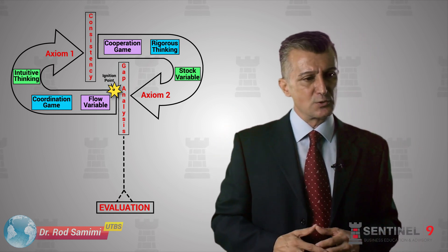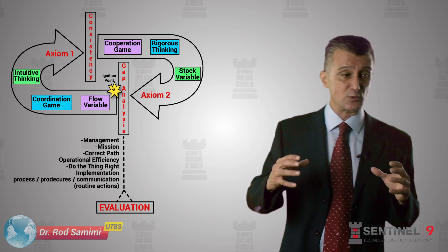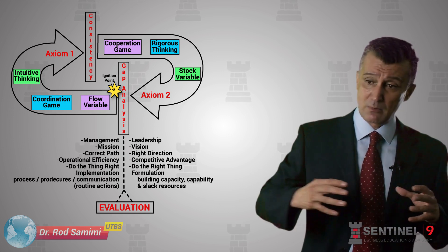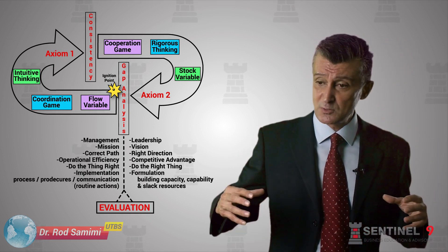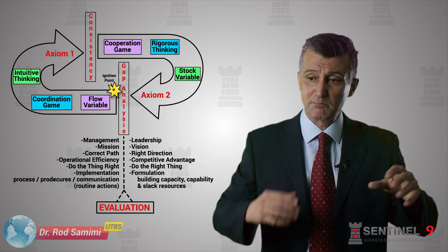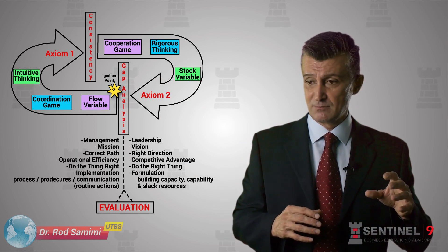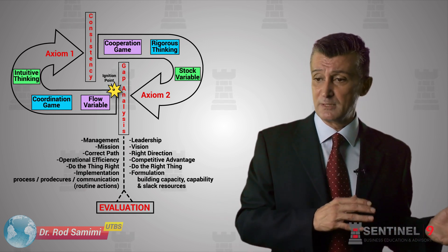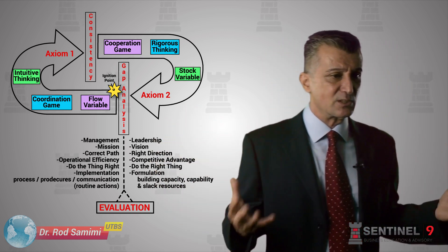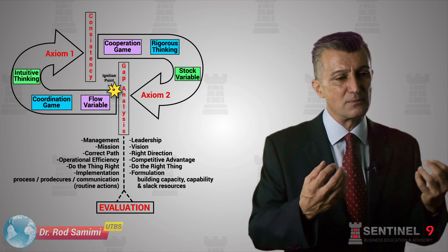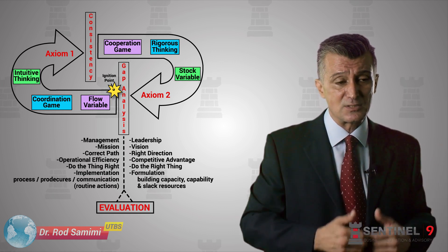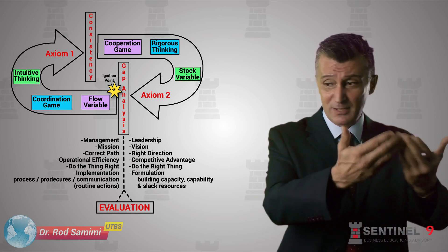In a business, for instance, management process is very much associated with axiom number one — efficiency, how do we do things right. Leadership and directors are more associated with axiom number two — where do we go, what do we create. Strategic thinking, management — they both need each other; without one, the other malfunctions. In fact, if you don't have one, the other can be more harmful even if it is efficient. These two axioms are essential in forming a theoretical framework that shows how strategic thinking in business can create efficiency, effectiveness, management, directorship, vision, mission, operational efficiency, and competitive advantage.